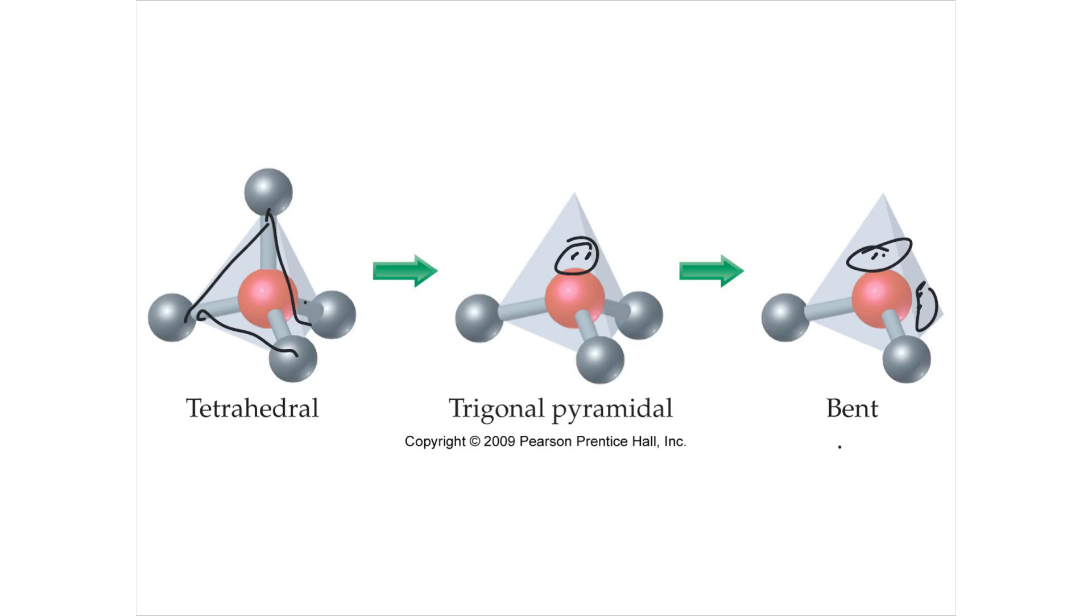Ammonia would be trigonal pyramidal, like NH3. So you can make some predictions of what these shapes are going to be based upon where they are in the periodic table, and how many that they have as they link up, and what's the central atom.